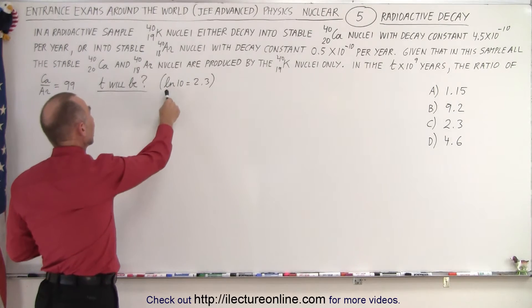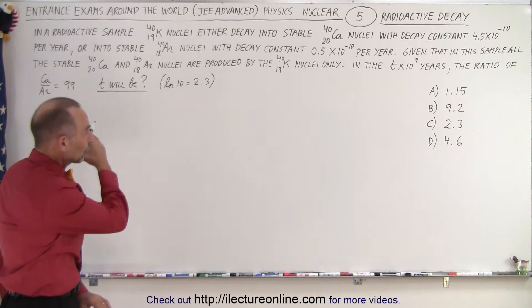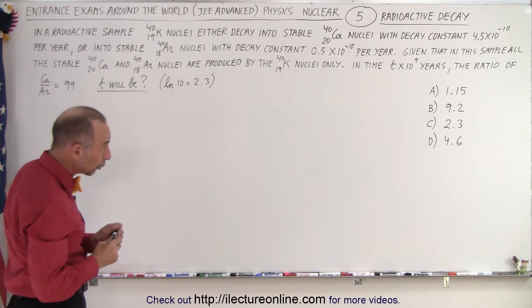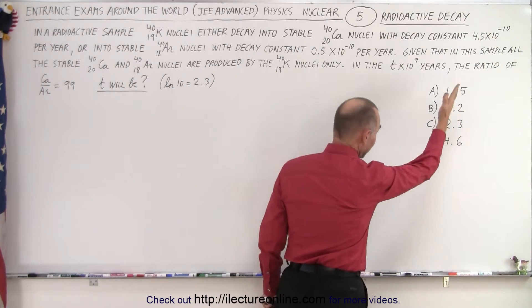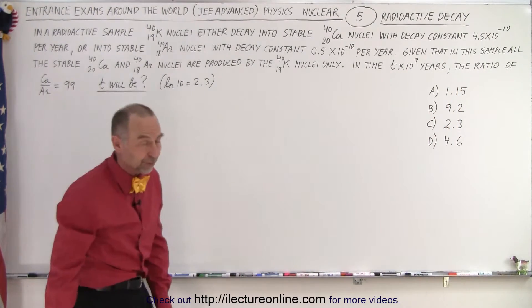They do tell us that the natural log of 10 is 2.3 and so we are looking for t. Now those are the possible answers: either 1.15 billion, 9.2 billion, 2.3 billion, or 4.6 billion years before this happens.